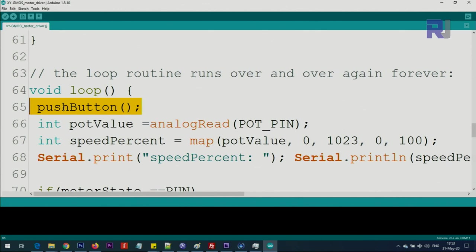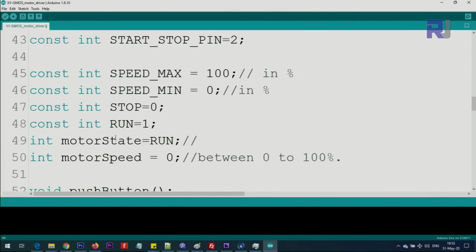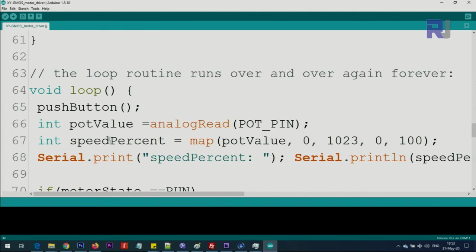Inside the loop we check the push button state using this function which updates the motor state variable either as run or stop every time you press the push button. Then we use analogRead pot pin - this is pin analog zero. We read the pin, whatever the value is, we're storing it in a variable called potValue.